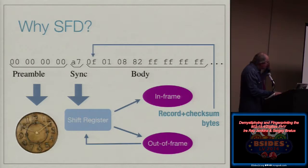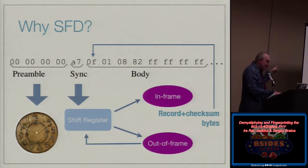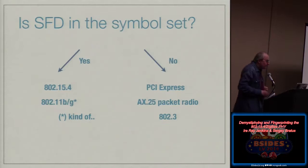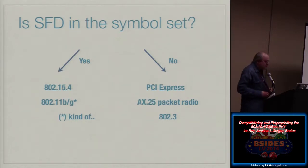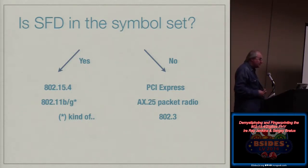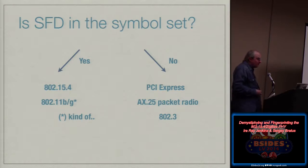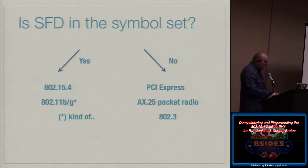Something strange: the start-of-frame delimiter and preamble are encoded exactly the same way as the body of the frame. The SFD is actually in the symbol set. This is not the case for Ethernet, PCI Express, or packet radio — but it is the case for 802.15.4, and kind of for 802.11b/g. The problem with b/g is that they switch the modulation in the middle of the frame as part of the transition from B to G.